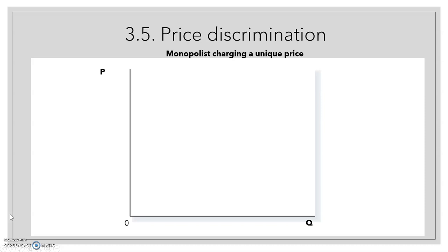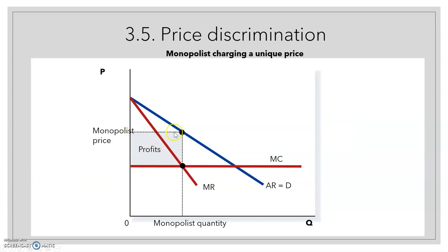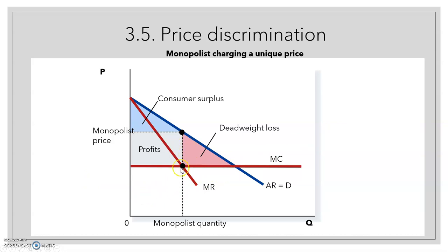In this slide we have the initial situation where a monopoly charges the same price to all consumers. With a horizontal marginal cost, the quantity exchanged is unique and there is only one price. The profits are the difference between average revenue and cost. The consumer surplus is the triangle above the price and below the demand curve. And we have the deadweight loss — only this area, because the marginal cost is horizontal. If marginal cost were increasing, we would have an even greater deadweight loss.